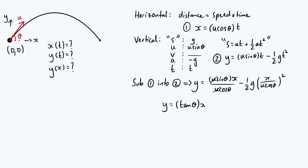Expanding and simplifying, we get: y = tanθ·x − gx²/(2u²cos²θ). That is the Cartesian equation of the trajectory. It's an upside-down quadratic — a parabola — with this nice symmetrical shape, which arises because we have no air resistance.